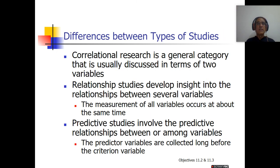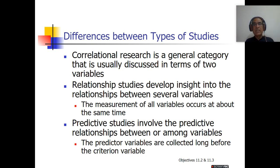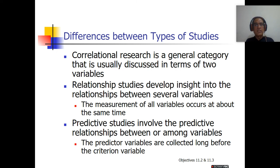The difference between types of study: correlational research is a general category discussed in terms of two variables. A relationship study develops insight into the relation between two or more variables, and the measurement of all variables occurs at the same time. A predictive study involves the predictive relation between or among variables — if two variables, it is 'between'; if more than two, it is 'among.' In predictive studies, predictor variables are collected long before the criterion variable.